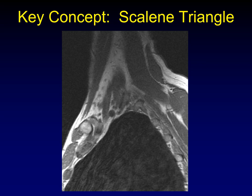The scalene triangle is perhaps the key concept of brachial plexus anatomy. The anterior scalene muscle, middle scalene muscle, and posterior scalene muscle are visible along their length in the sagittal plane — the middle and posterior scalene muscles are often indistinguishable and appear as one muscle mass. The anterior and middle scalene muscles along with the apex of the lung form the scalene triangle. Running through the scalene triangle are the trunks of the brachial plexus — upper, middle, and lower trunk.